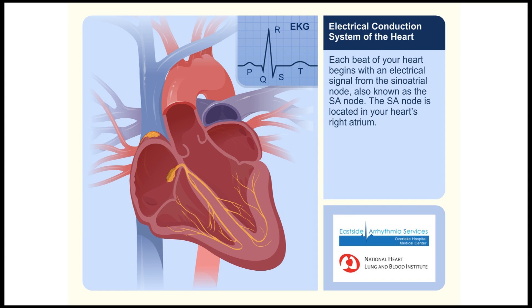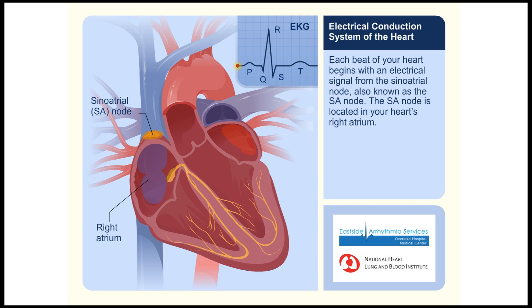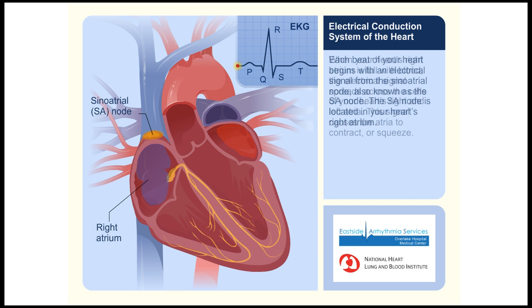Each beat of your heart begins with an electrical signal from the sinoatrial node, also known as the SA node. The SA node is located in your heart's right atrium.